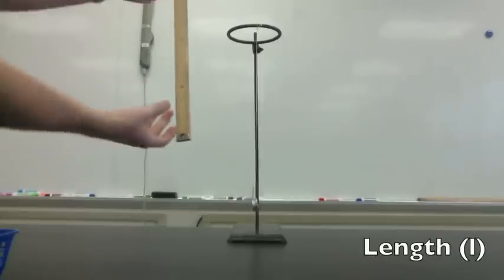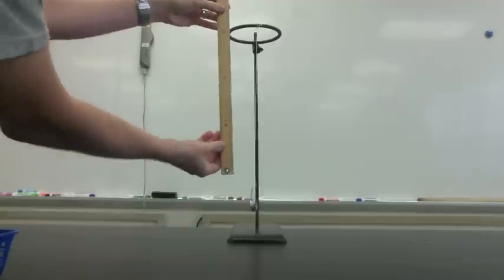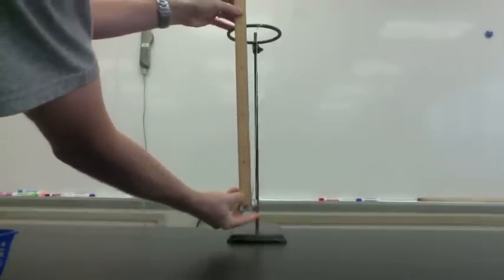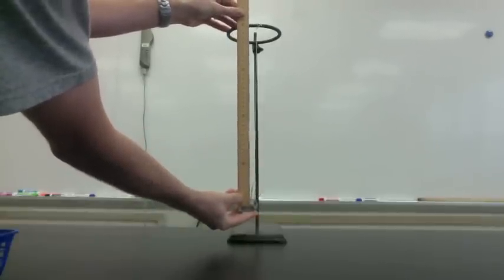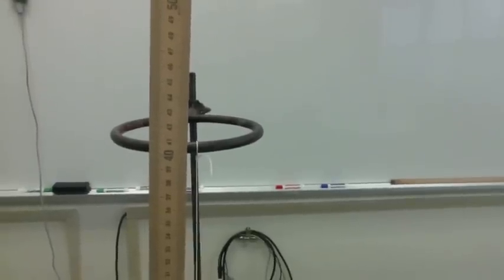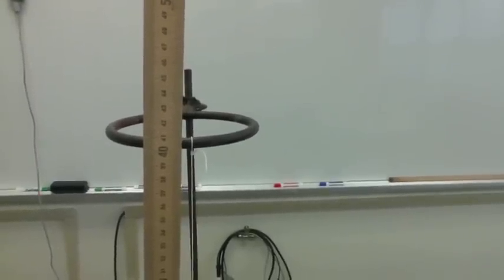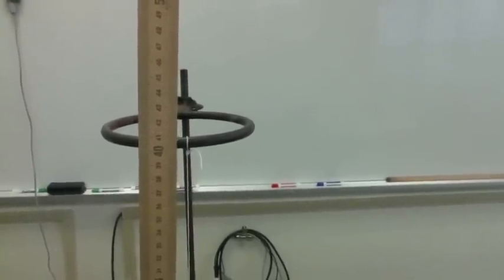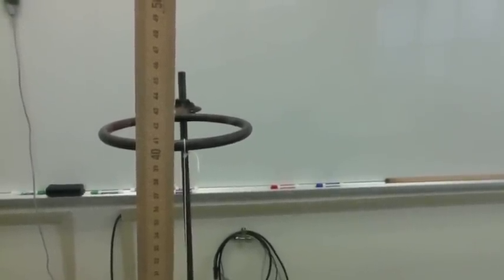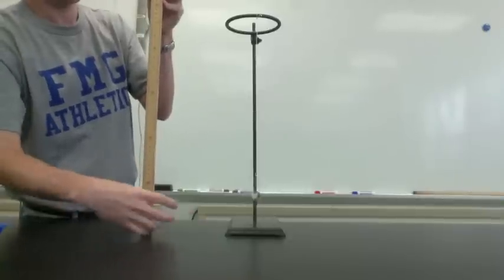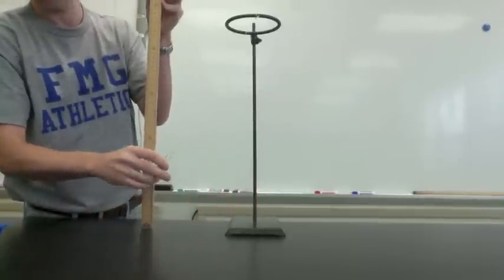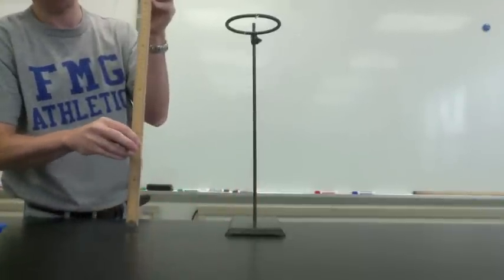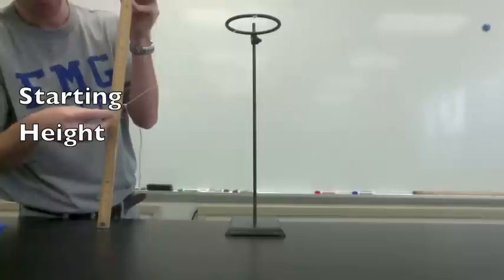We also found the length of the pendulum, measuring from the bottom of the washer to the top of the string. We want to pull the washer back to the same starting height for each trial, which is 25 centimeters.